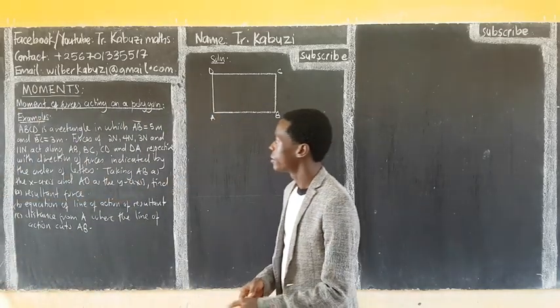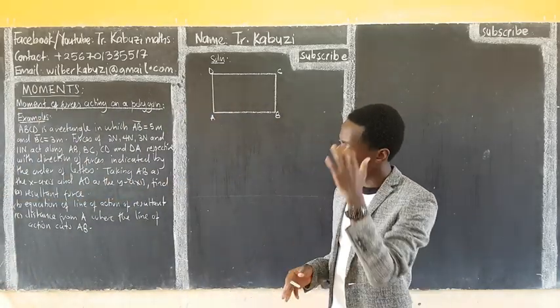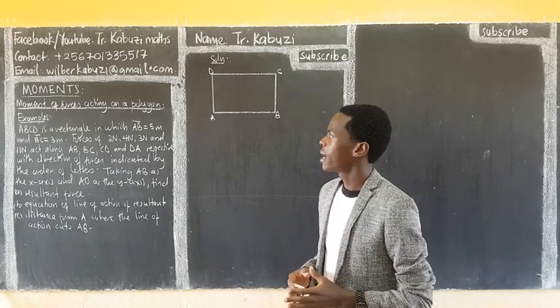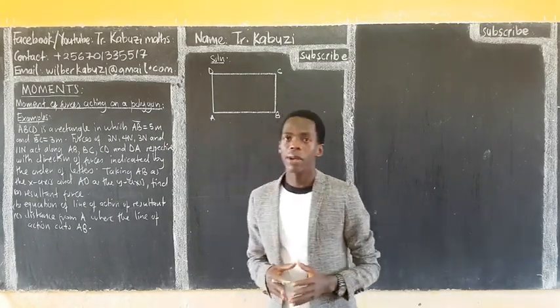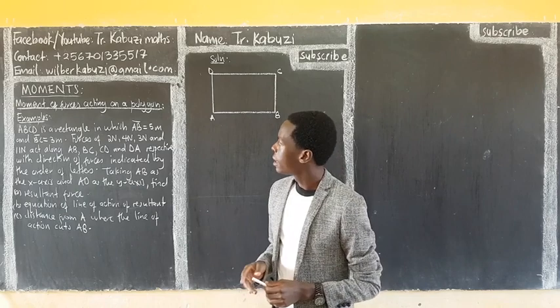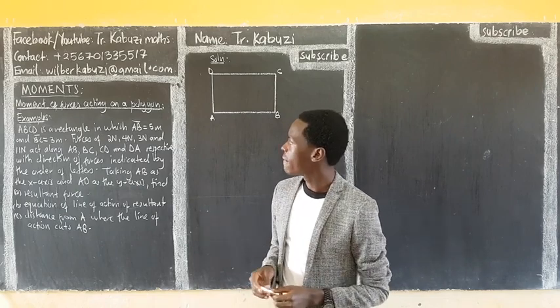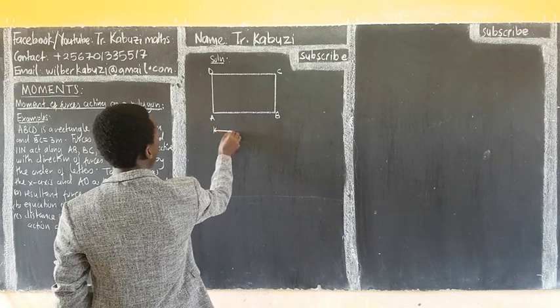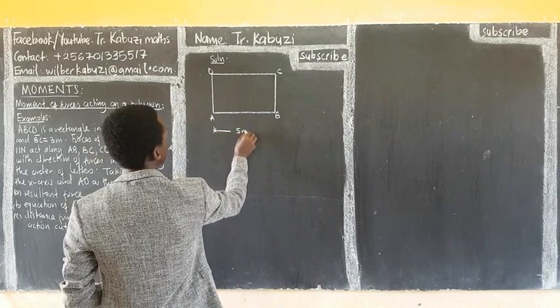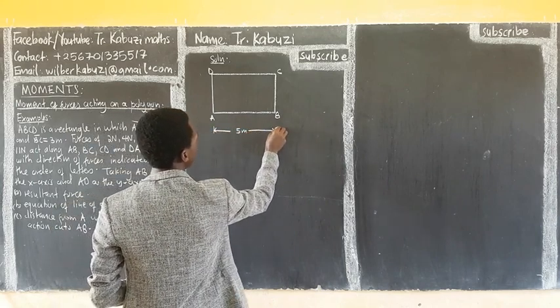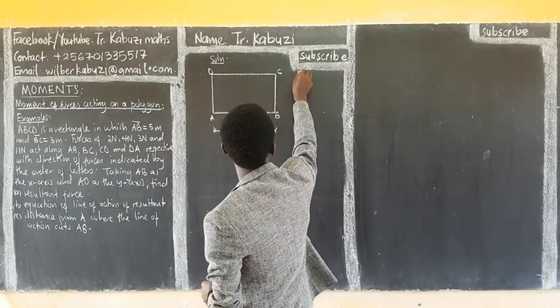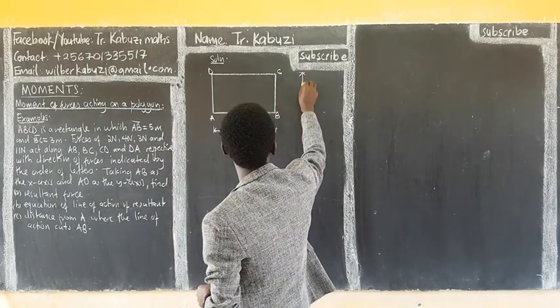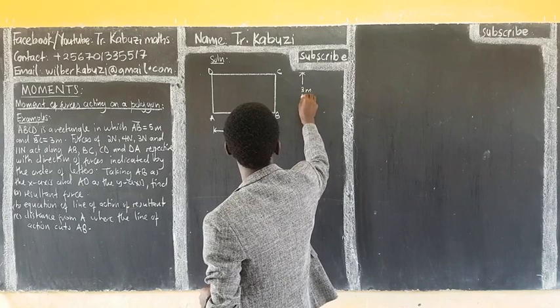Okay, let us see my examples. This is another one. Now this one we are going to consider a rectangle. ABC is a rectangle in which AB, this AB is going to be 5 meters. That's over here, up here, we have 5 meters. And then this one is 3 meters.